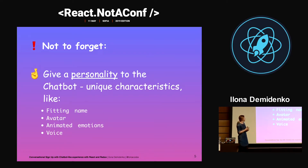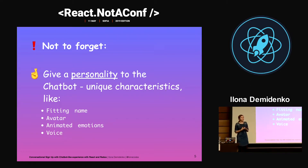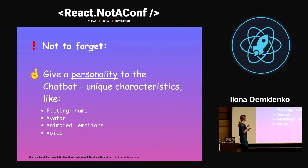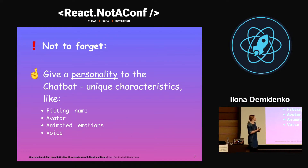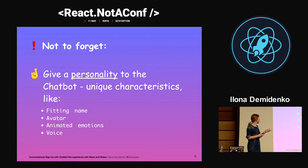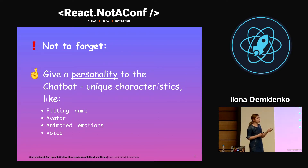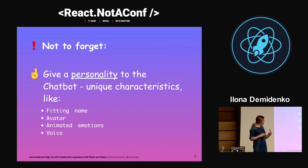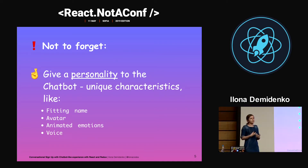The third rule is to give a personality to the chatbot. When we are chatting with someone, we want to chat with a person, not a bot. It's a good approach to make the conversation more personalized. For that, you can give a name, avatar, animated emotions, and voice to the chatbot. My chatbot has an avatar and a voice, and this shapes how the chatbot will reply to the user.